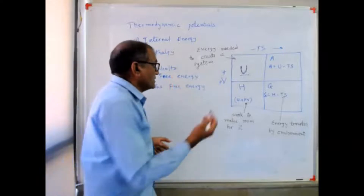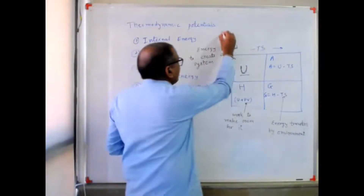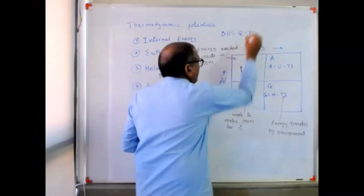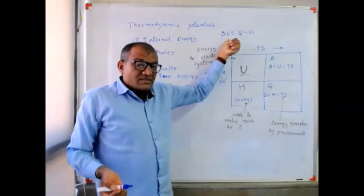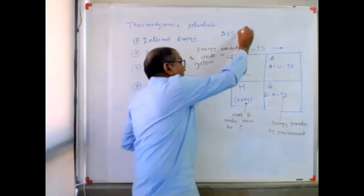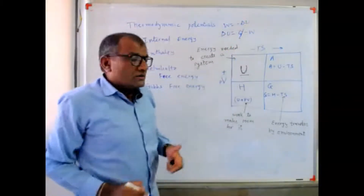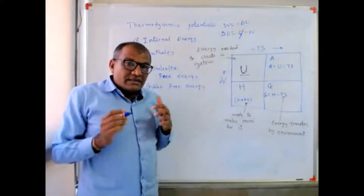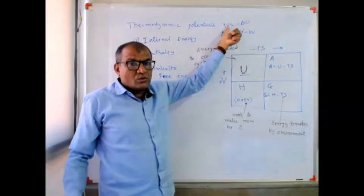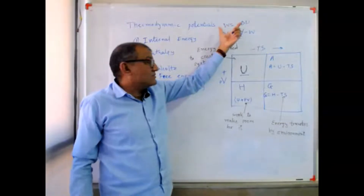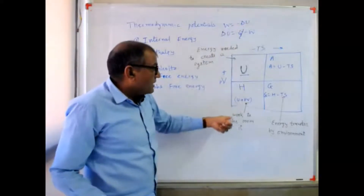That is the total energy from the microscopic view. How can internal energy be a thermodynamic potential? If we talk about the first law of thermodynamics, that is delta U equal to Q minus W. In an adiabatic system, Q is zero, so W equals minus delta U. The meaning is internal energy has some ability to do some work — that's why it is a thermodynamic potential.